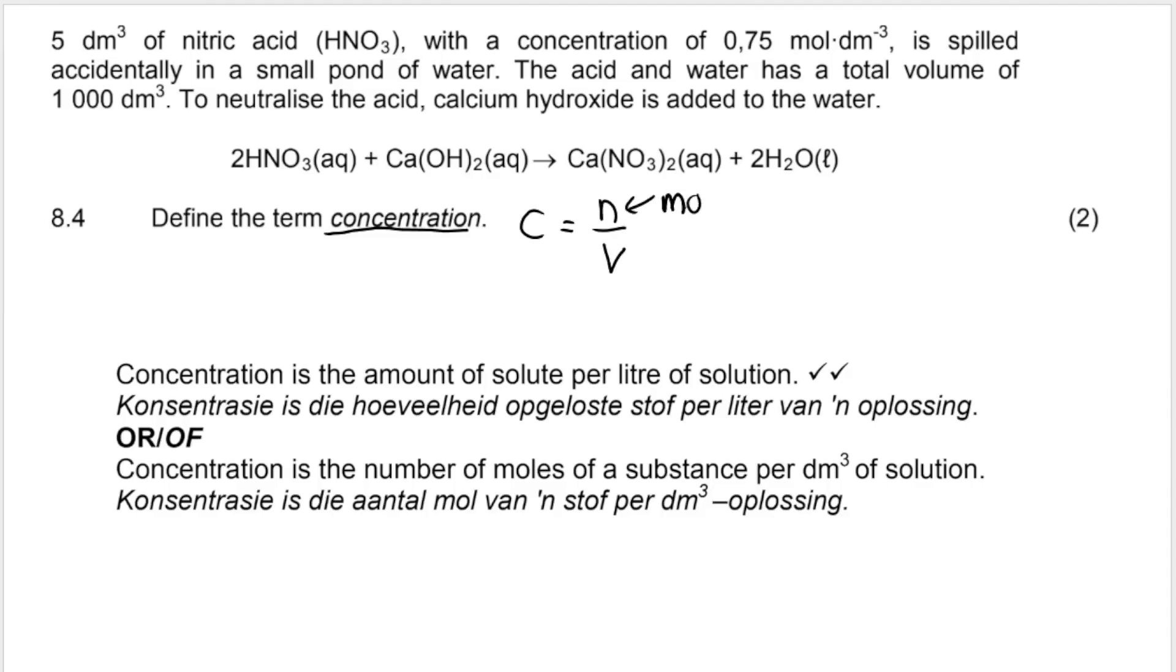N is number of moles of solute. Moles of solute. When we divide, it's per. And then this is volume or per cubic decimeter or per liter of solution. So it's moles of solute per cubic decimeter. Remember, volume is measured in cubic decimeters. And one cubic decimeter, if you've forgotten, is equal to one liter. So the amount of solute, the moles of the solute per liter or per cubic decimeter of solution.